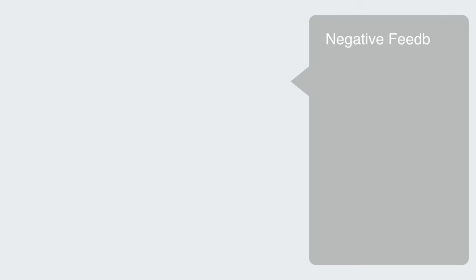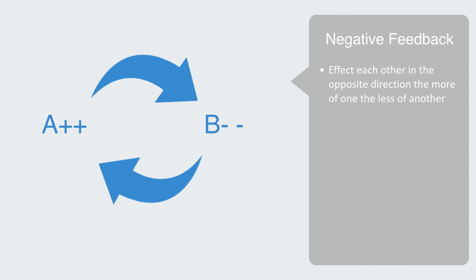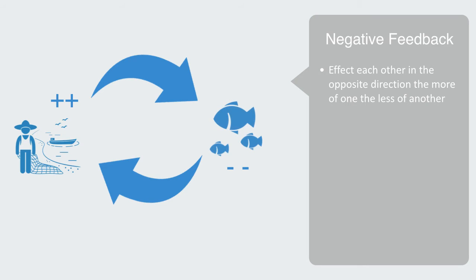Negative feedback loops are relations where the variables associated with two components feedback to affect each other in the opposite direction. The more of one, the less of another. The more fishing we do, the less fish there will be, which will feedback to reduce our capacity to fish in the next season. This is also called a balancing loop.